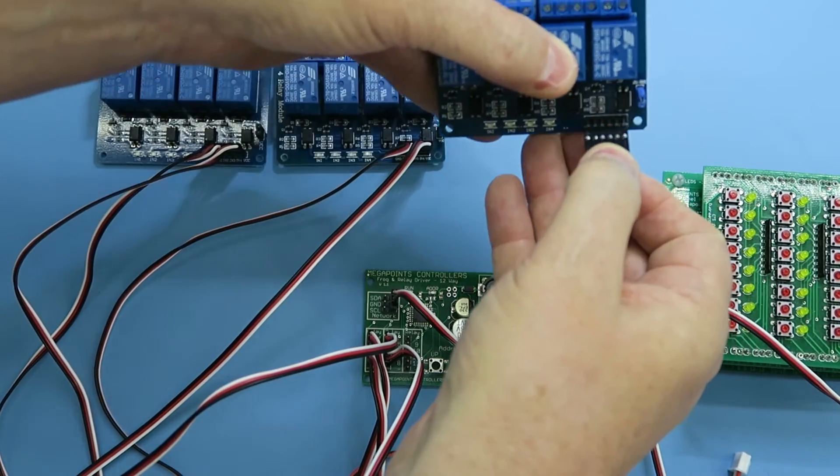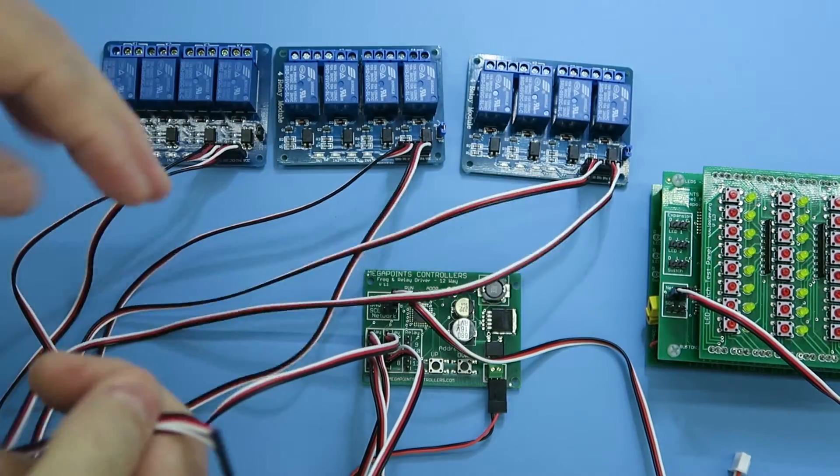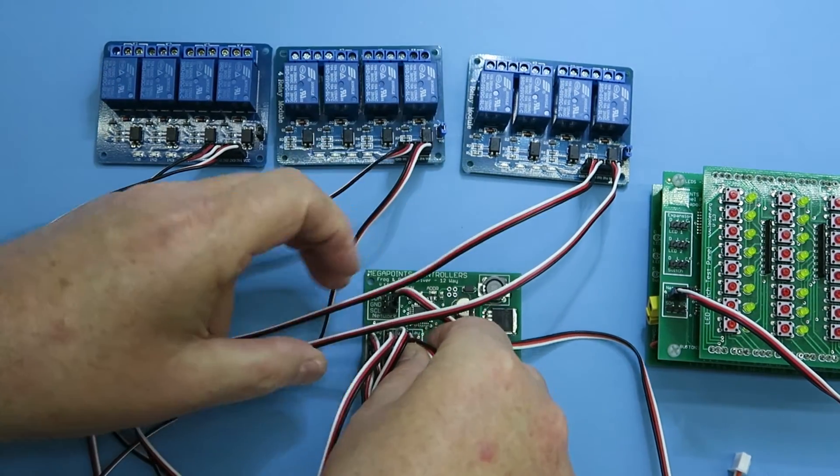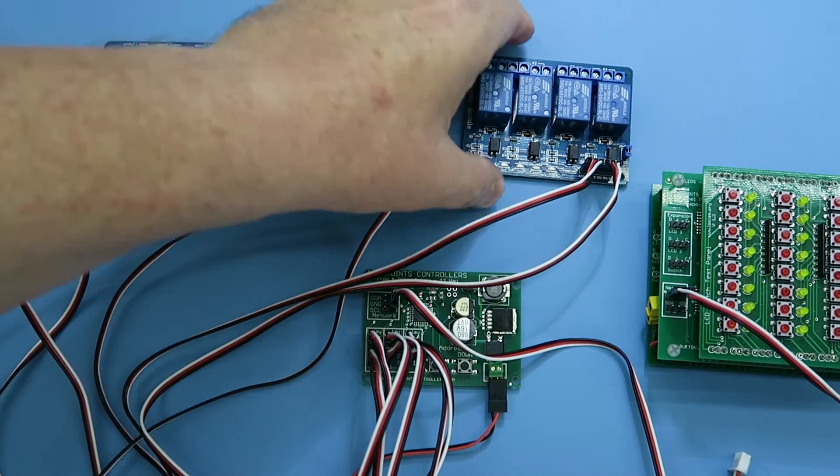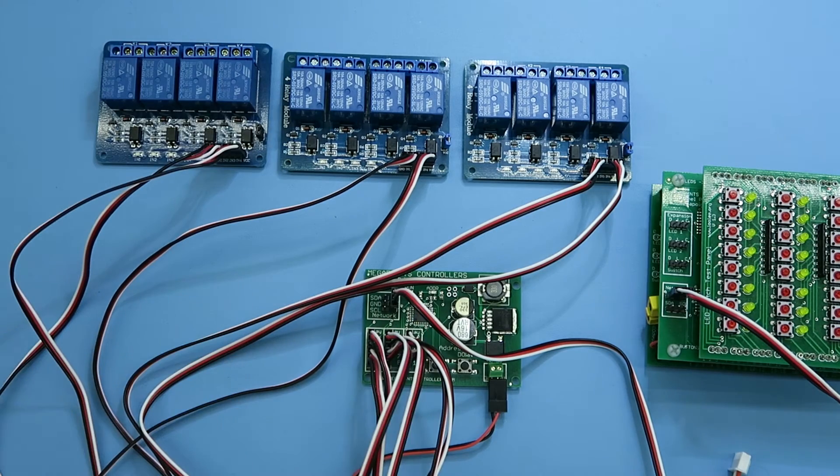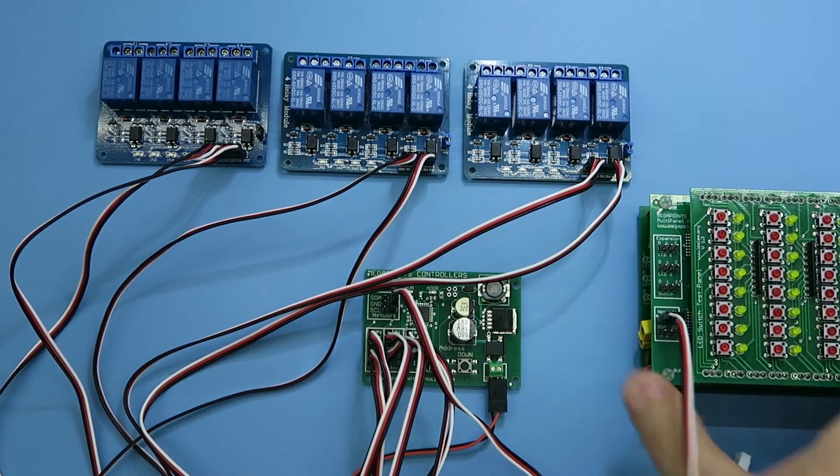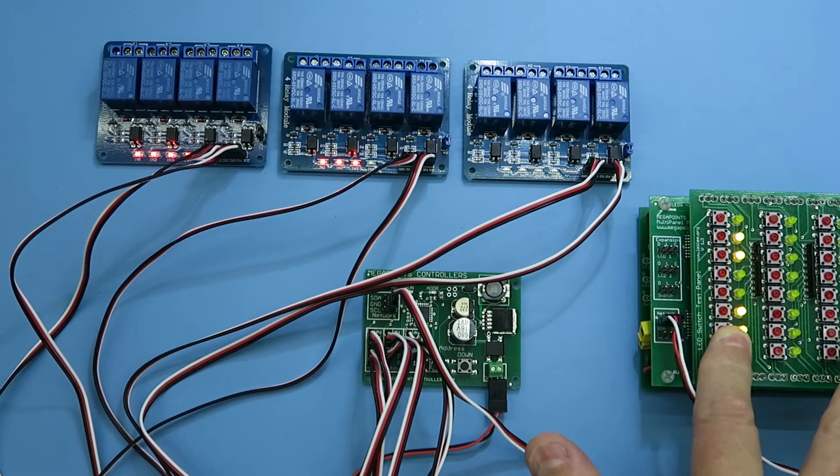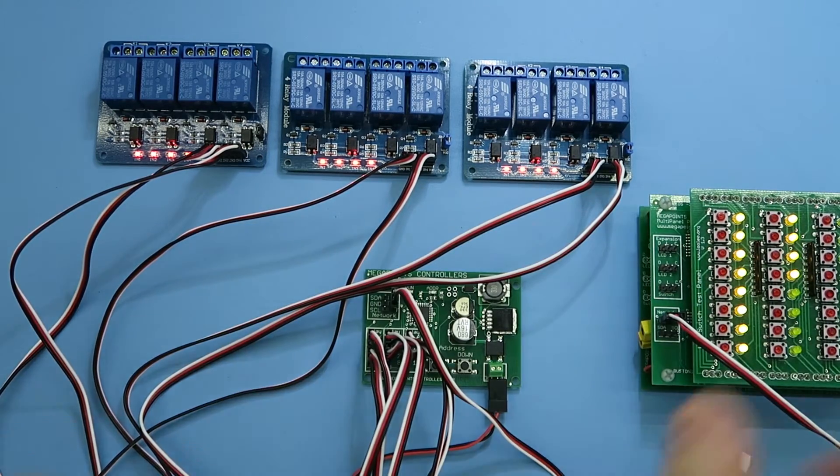Plug in the relay and wire it to the relay driver so there we go 12 relays connected to one relay board which in turn is connected to the mega points network and from here I can mash the buttons on my multi-panel or control panel and see each of the 12 relays fire up.